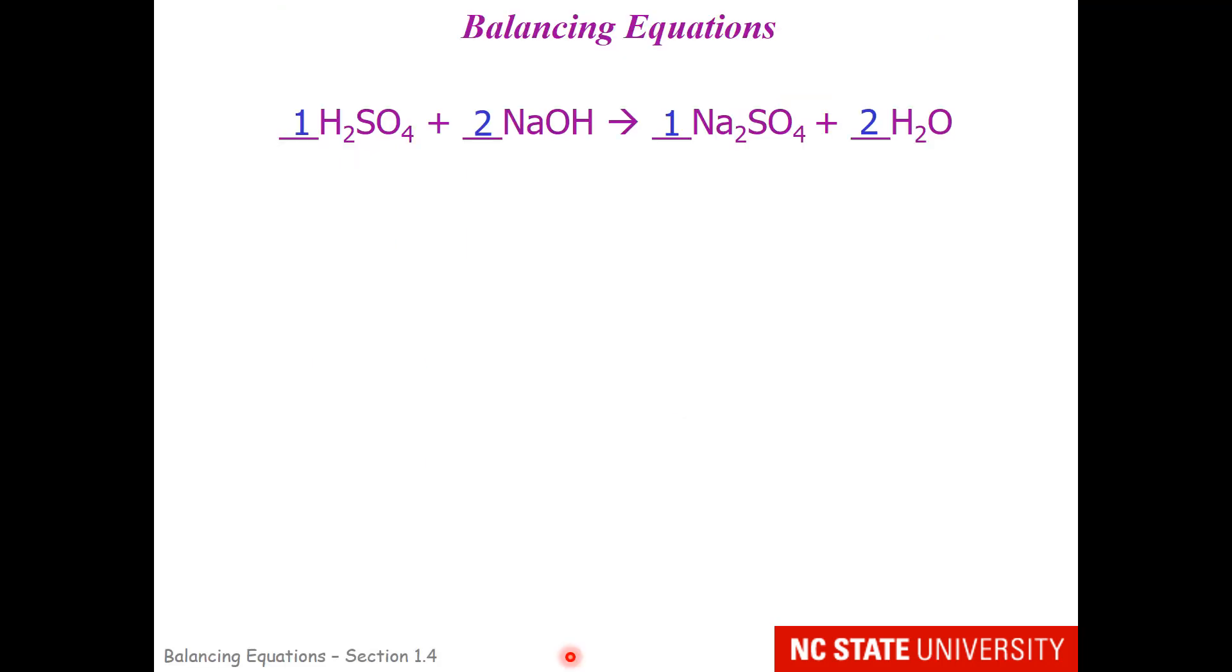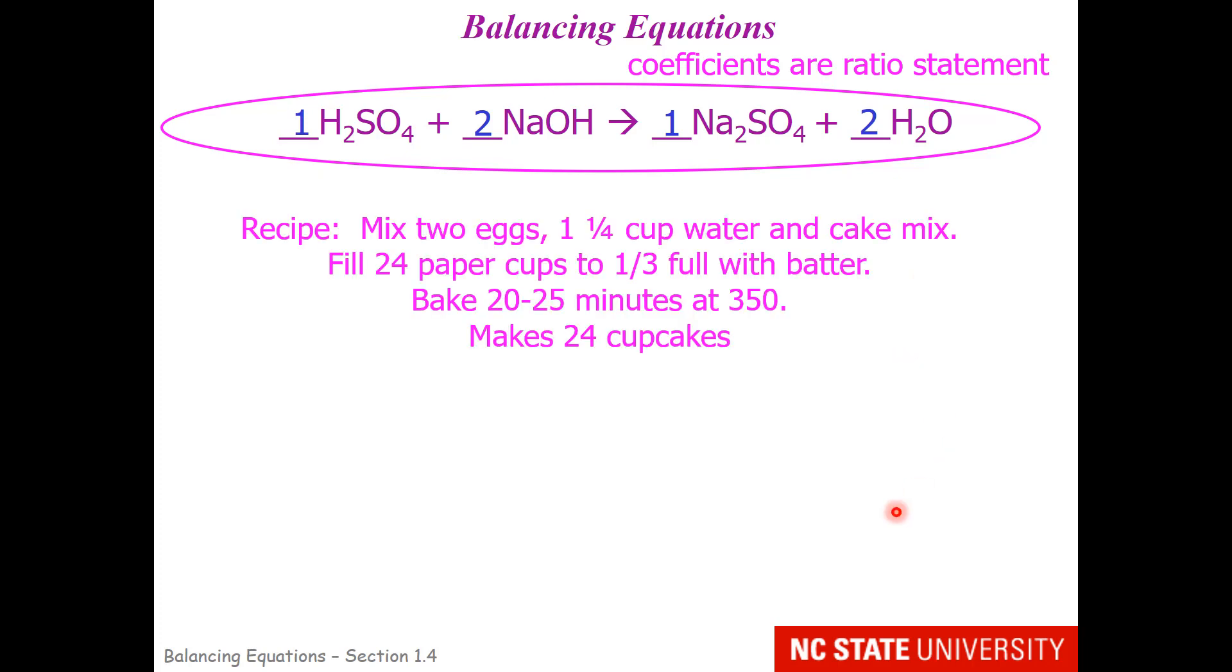Balancing equations gives us a ratio statement related to that particular equation. What I have here is a balanced equation for if you wanted to make sodium sulfate from sulfuric acid. I would need one mole of sulfuric acid, two moles of sodium hydroxide, and my recipe would give me one mole of sodium sulfate and two moles of water. So these coefficients are a ratio statement. If I wanted to make two moles of sodium sulfate, clearly I'd need four moles of sodium hydroxide and two moles of sulfuric acid.